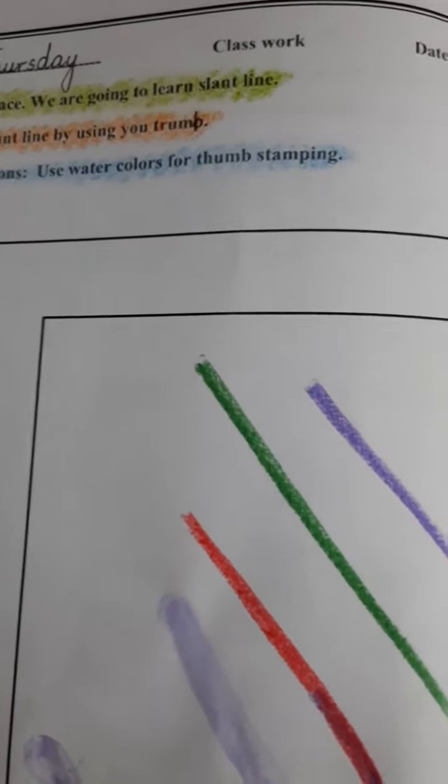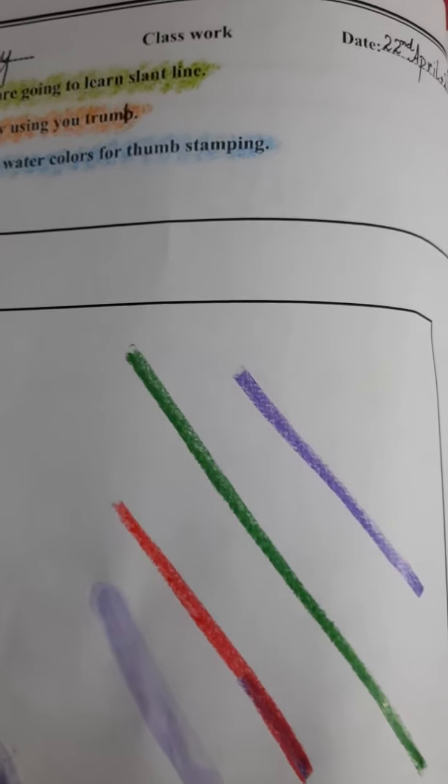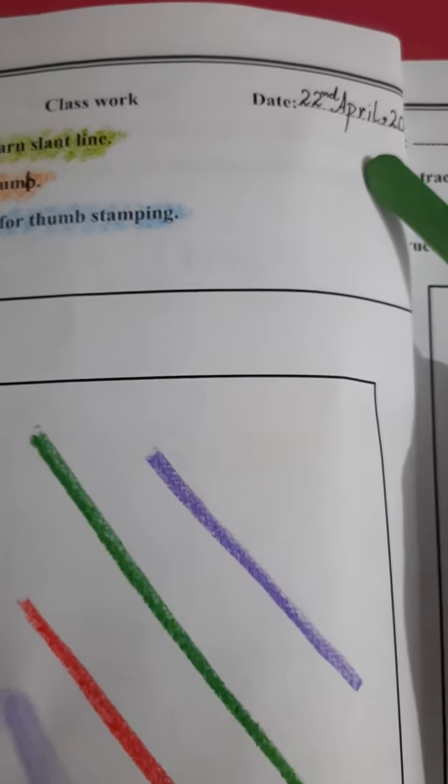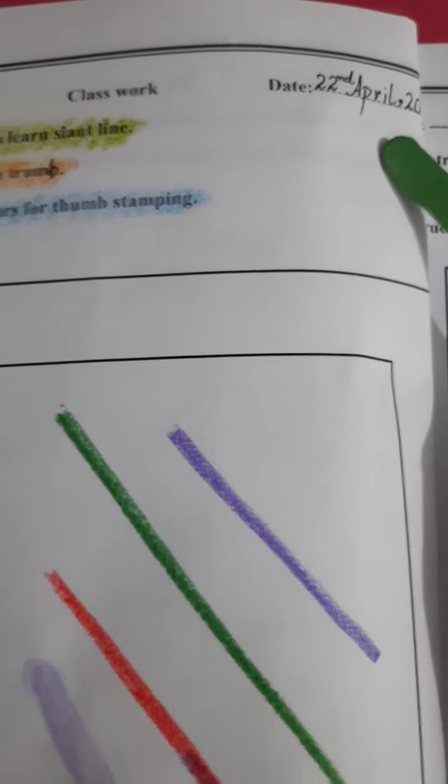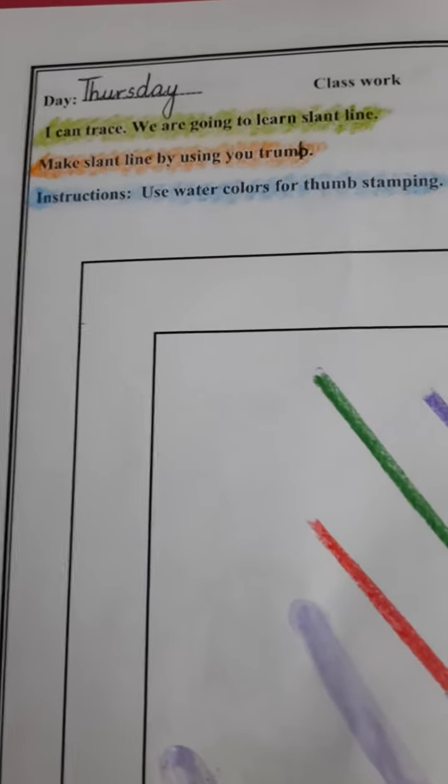First of all, write date and day on the top of the page. What is date today? Today is 22nd April 2021. And what is day today? Thursday.